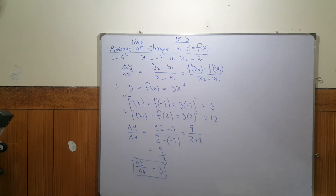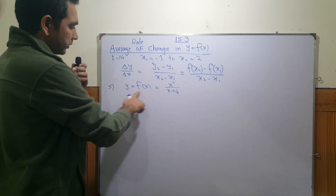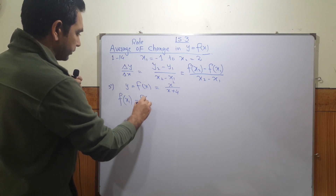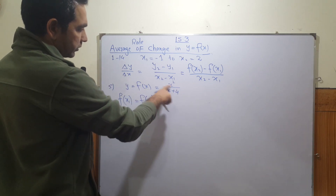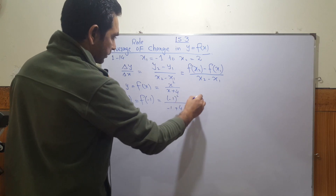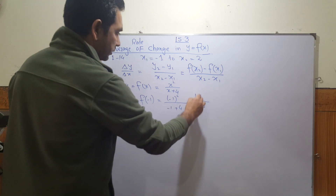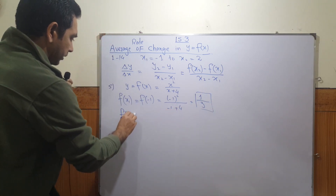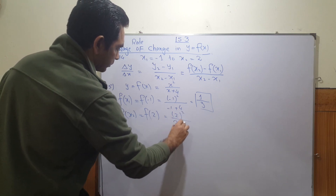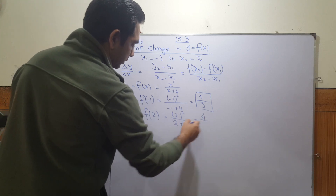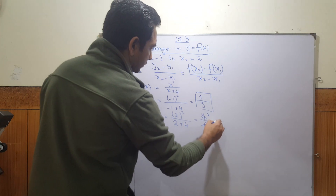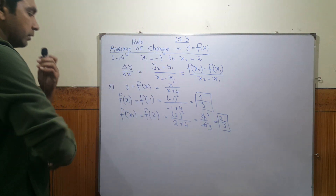In question 5, the function is f(x) = x²/(x + 4). To find f(x₁) = f(-1): replace x with -1, giving (-1)² divided by (-1 + 4) = 1 over 3. For f(x₂) = f(2): replace x with 2, giving 2² divided by (2 + 4) = 4 over 6, which simplifies to 2 over 3.